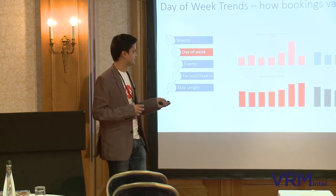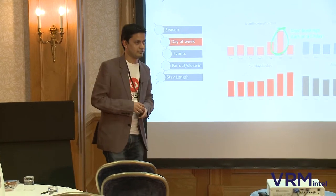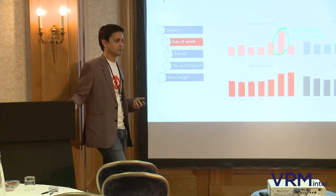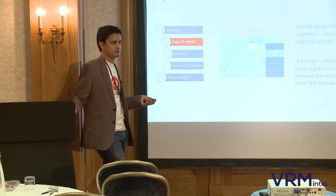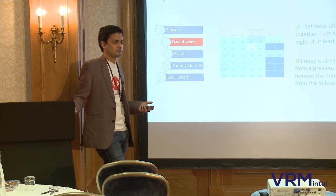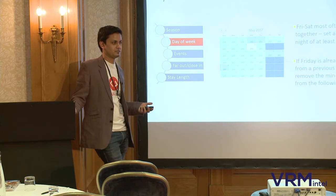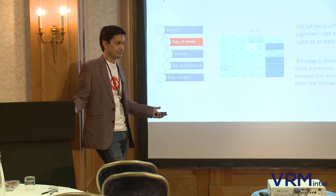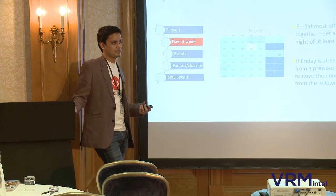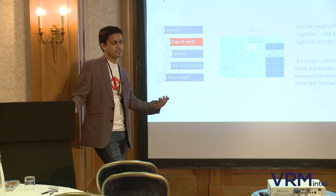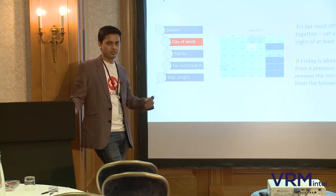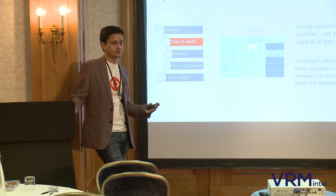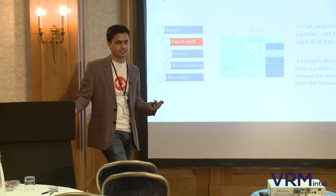If revenue is doubled mainly because nights booked are doubled while prices are similar, you know you could raise your weekend prices — you'll reduce occupancy slightly but that 2x could become 2.2x or 2.3x. Also, most bookings tend to start on a Friday rather than Saturday. You can increase weekend prices and set a minimum stay of two nights on weekends — there's no point taking a single night when most bookings end up being two nights anyway.